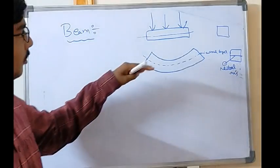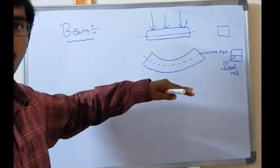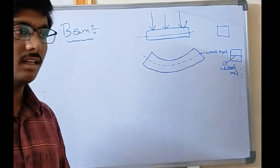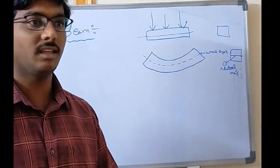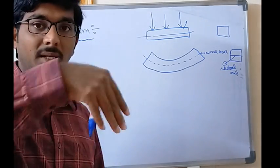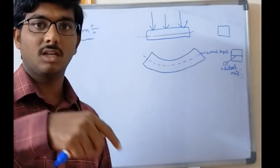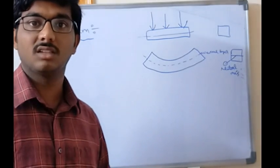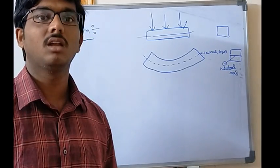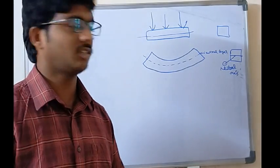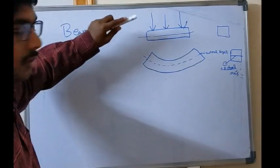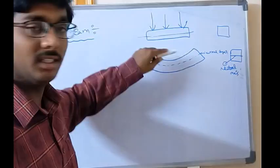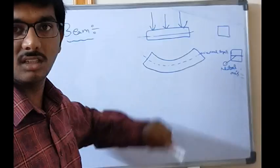A beam is a horizontal member. In a structure, you can see there are a large number of beams, columns, footings, and foundations. Generally, the load transfer mechanism in the structure will be: from beams, transverse loading transfers to columns; from columns, the load transfers to footings; from footings, the load transfers to the subsoil structure. That's why we study the beam — how many loads it can sustain, what will be the strength, the compressive stresses, and the tensile stresses.